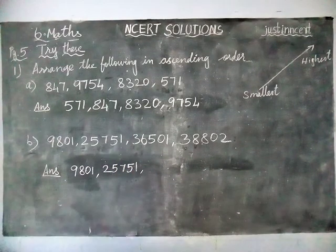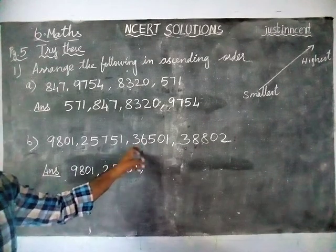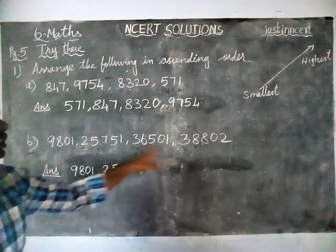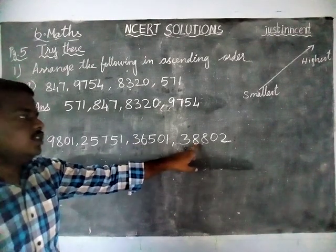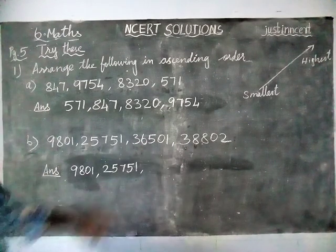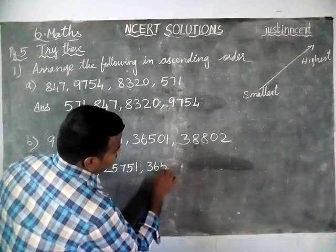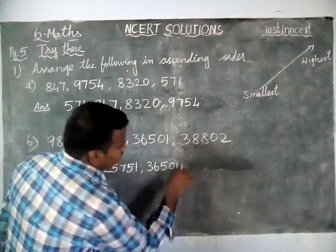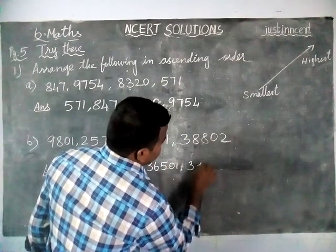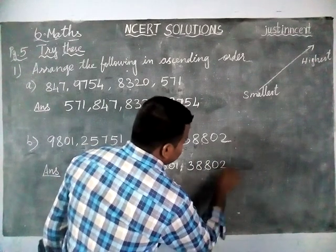Next, we have two numbers starting with 3. So we are checking the next thousands place. Here the thousands place is 6, and this thousands place is 8. So in this, this number is the smallest number — 36501. So at last, the greatest number is 38802.